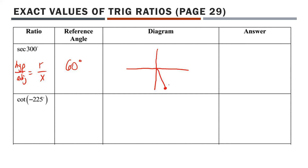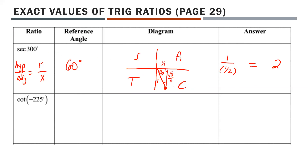Since there's a 60-degree angle, we know this is a special triangle. On a unit circle, the hypotenuse is 1. The side across from the 30-degree angle is 1/2, and the side across from the 60-degree angle is √3/2. For secant 300, we're looking for R over X. X is 1/2 and R is 1, so it's 1 over 1/2, which equals 2. By the CAST rule, cosine is positive in quadrant 4, and since secant is the reciprocal of cosine, secant 300 is positive 2.